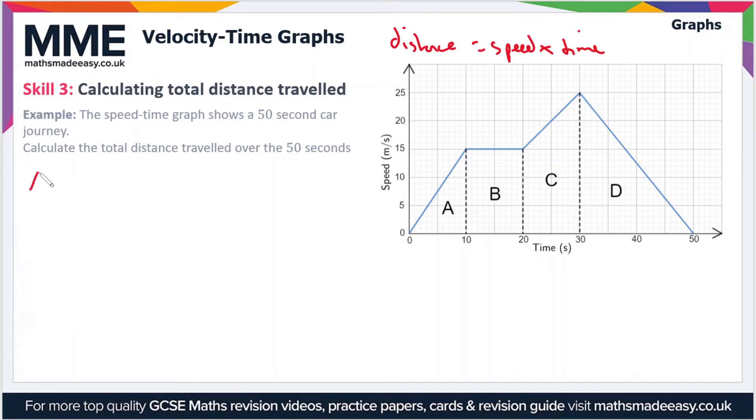Let's look at section A first of all. We've got a triangle, so to work out the area of a triangle, use the formula half base times height. We have 0.5 times the base, which is 10 seconds, times a height of 15. That gives us 75 meters in total. Our units are meters per second and seconds, so the seconds cancel and we end up with meters.